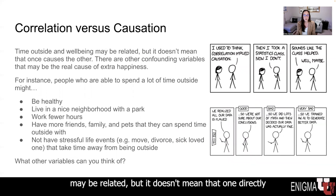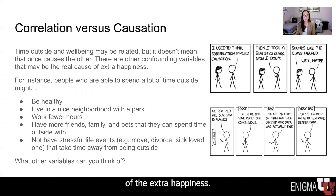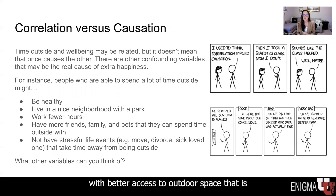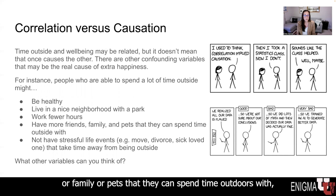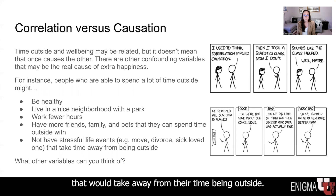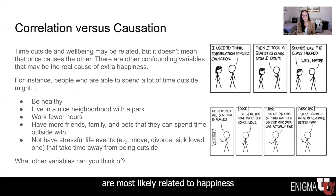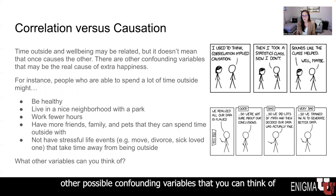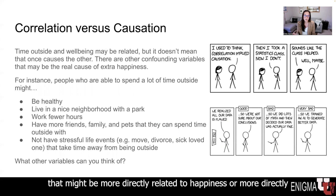Bringing this back to the article about being outside: time outside and well-being may be related, but it doesn't mean that one directly necessarily causes the other. There are other confounding variables that may be the real cause of the extra happiness. For instance, people who are able to spend a lot of time outside might generally be healthier, live in a nicer neighborhood with better access to outdoor space, work fewer hours, have more friends or family or pets, and might not have stressful life events such as a move, a divorce, or a sick family member taking away from their time outside.